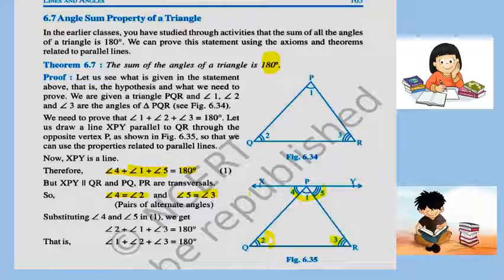So what we will do? We will draw a line XPY. See the second figure of this theorem. Draw a line XPY which is parallel to QR through the vertex P, as shown in the figure.